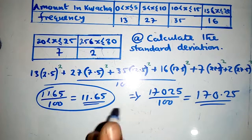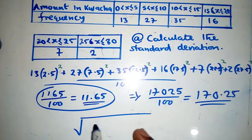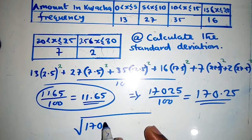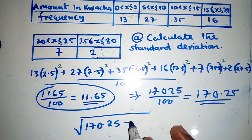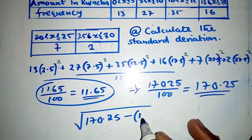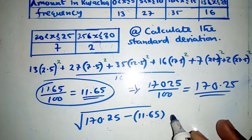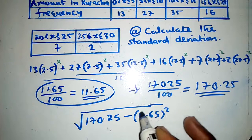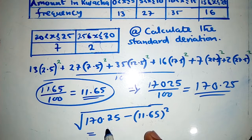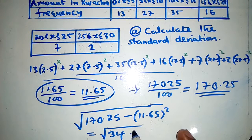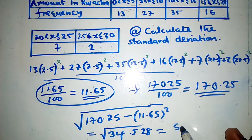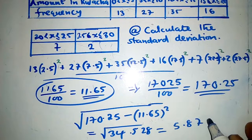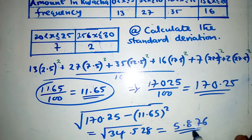Now take that result of 170.25 and subtract the mean squared — that is, 11.65 squared, which is 135.72. You get approximately 34.53... wait, working through the steps gives you 134.528, and taking the square root gives you approximately 5.876. This is your standard deviation.